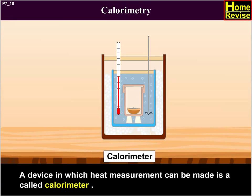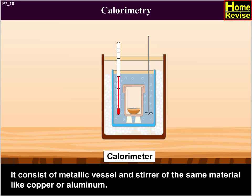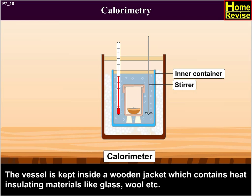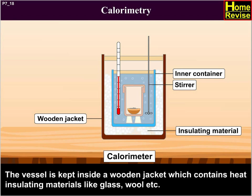A device in which heat measurement can be made is called a calorimeter. It consists of a metallic vessel and stirrer of the same material, like copper or aluminium. The vessel is kept inside a wooden jacket which contains heat insulating materials like glass wool, etc.